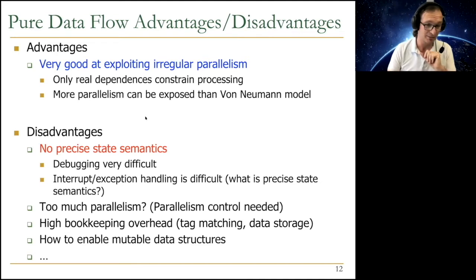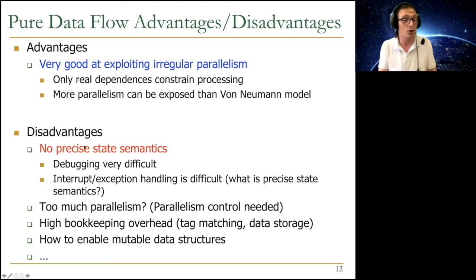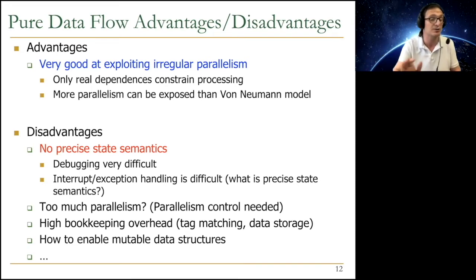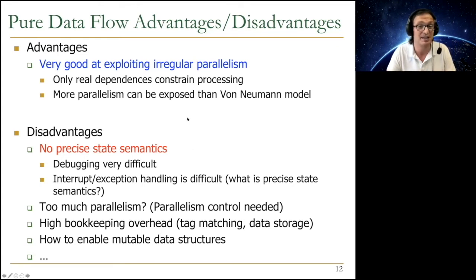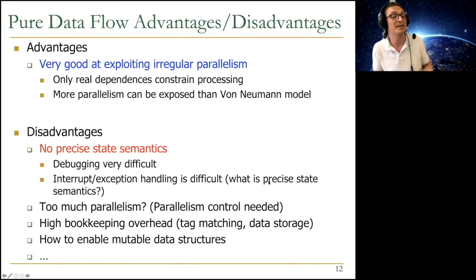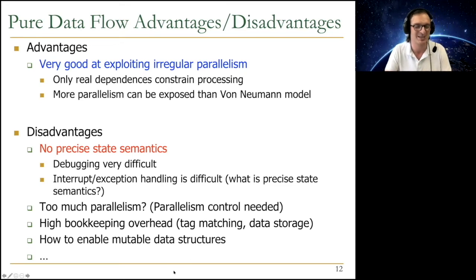Because you don't have precise state semantics, you need to solve these problems, and it's very difficult without giving up some dataflow principles. Other issues include too much parallelism potential — if you have the entire dataflow graph, you need hardware to control that parallelism, requiring a lot of tag matching logic and creating high bookkeeping overhead. You can resonate with this from the tag matching logic and value storage we discussed for out-of-order processors. At the ISA level it becomes even harder — you need much more tag matching, more data storage, and you can't even control the parallelism easily.